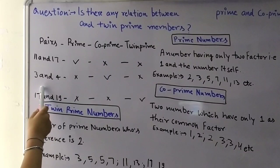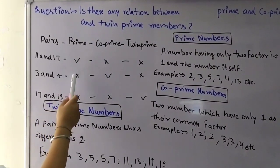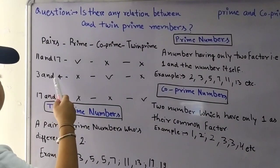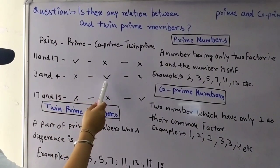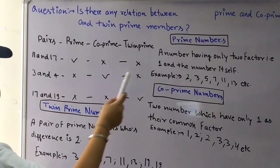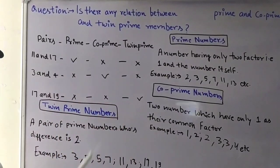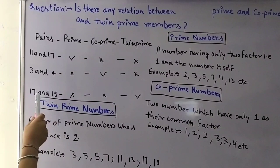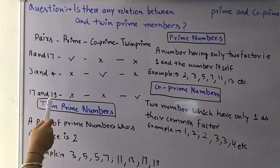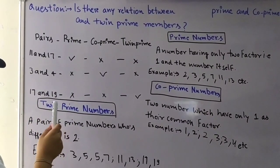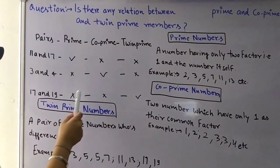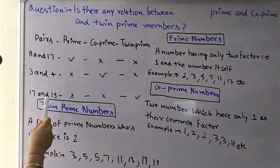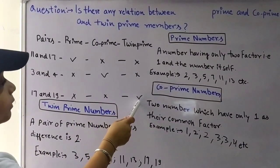Now let's move to 3 and 4. 3 and 4 in prime are incorrect, and 3 and 4 in co-prime are correct. In twin prime, 3 and 4 are not correct. Let's move to 17 and 19. 17 and 19 in prime numbers, they are not correct. 17 and 19 in co-prime, they are not correct. And 17 and 19 in twin prime, they are correct.